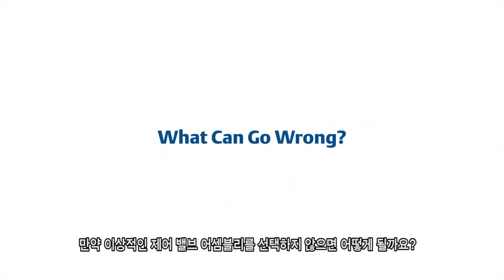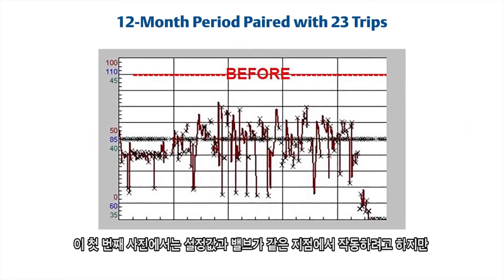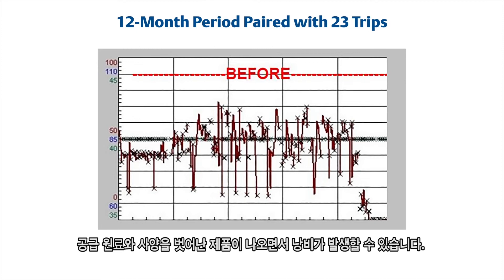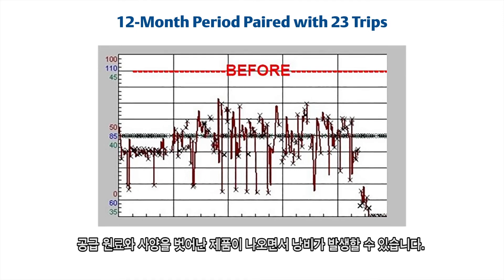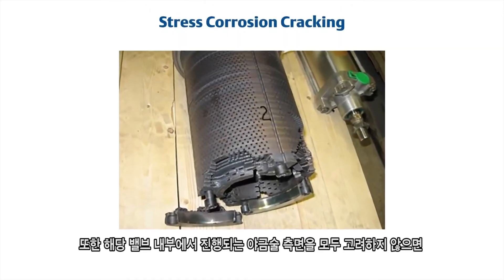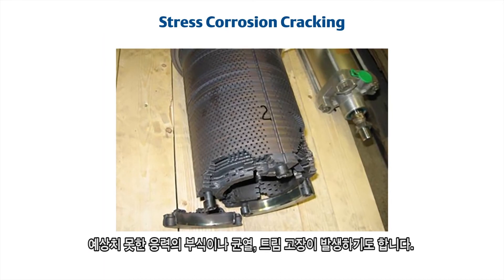What happens if you don't select the ideal control valve assembly? In this first picture you can see the set point, and you can watch the valve trying to operate at the same point, but it is jumping all over the place. Poor control can lead to wasted feedstock as well as off-spec product. Also, if you don't consider all the metallurgical aspects going on inside that valve, you can have stress corrosion cracking and trim failures that are unexpected.